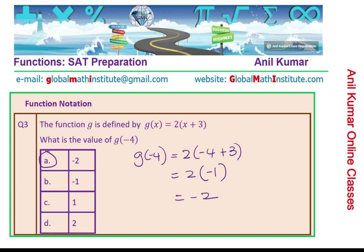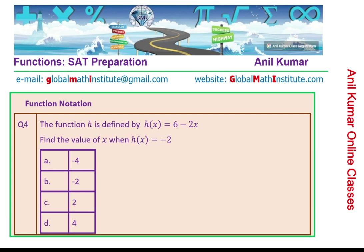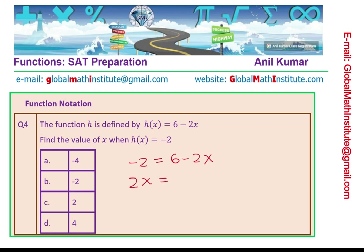As you can see, the first set of three questions was to find the output. Now let's look at question number 4. The function h is defined by h of x equals 6 minus 2x. Find the value of x when h of x is minus 2. Here h of x, the output, is given and we need to find x. Substituting minus 2 for h of x and rearranging, bringing x to the left side with 2, we get 2x equals 6 plus 2, which is 8. So x equals 8 divided by 2, which is 4. Option D is the right answer.